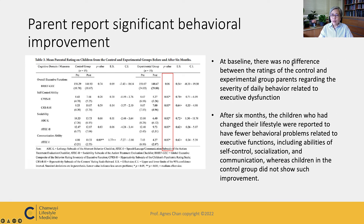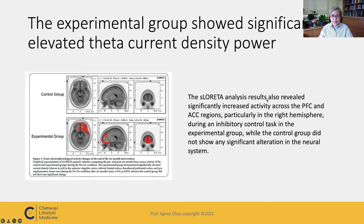At baseline, there was no difference between the two groups' parents' ratings regarding severity of daily behavioral problems related to executive dysfunction. After six months, children who had changed their lifestyle were reported to have fewer behavioral problems related to executive functions, including self-control, socialization, and communication, while children in the control group did not show such improvement. EEG analysis also revealed significantly increased activity across the prefrontal cortex and ACC regions, particularly in the right hemisphere during an inhibitory control task in the experimental group, while the control group showed no significant alteration in the neural system.